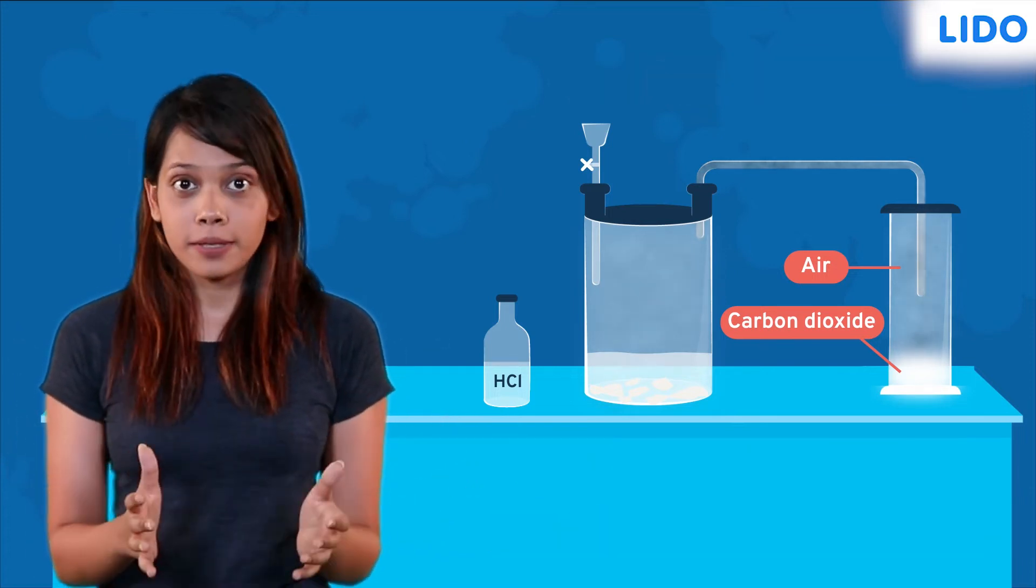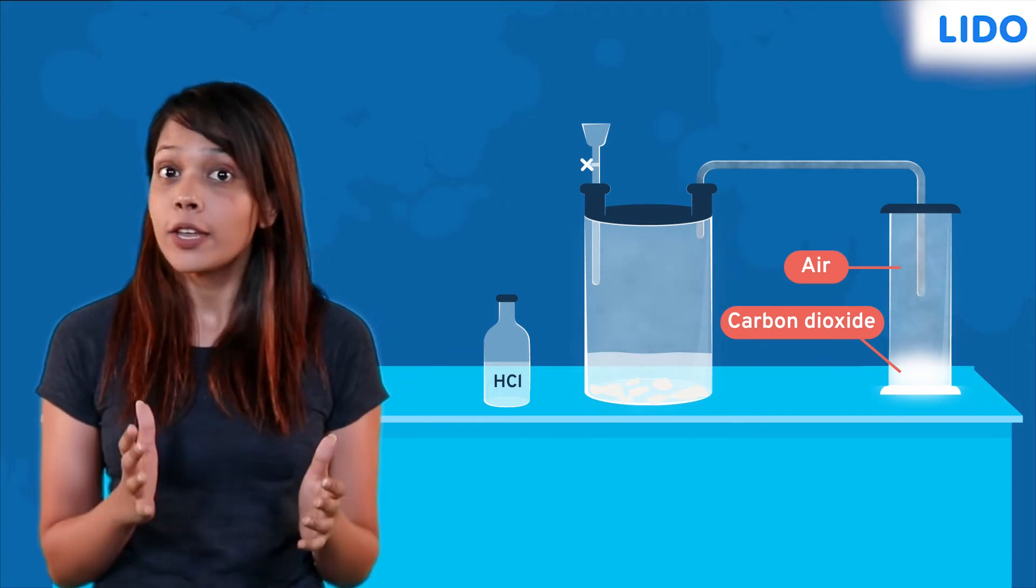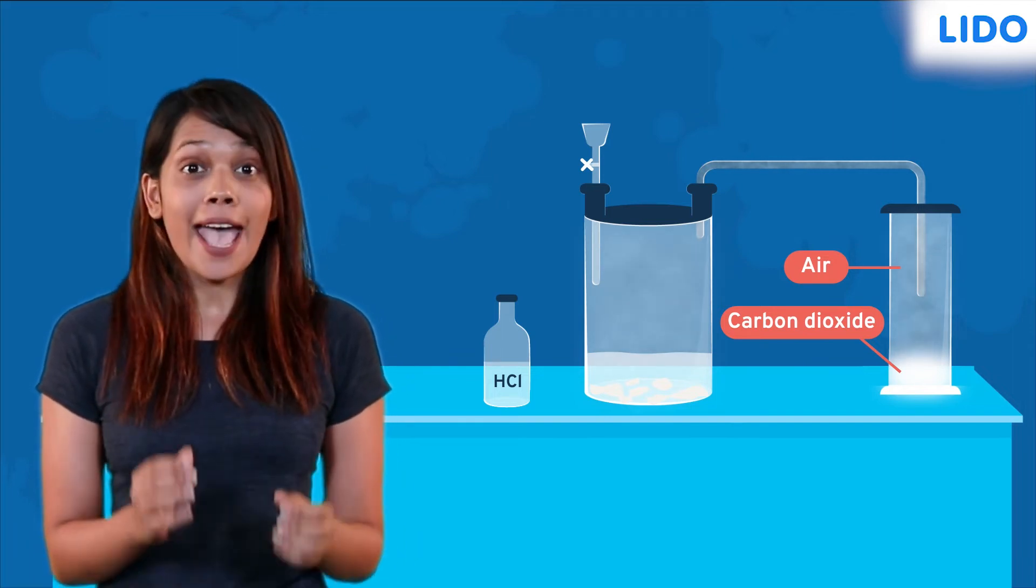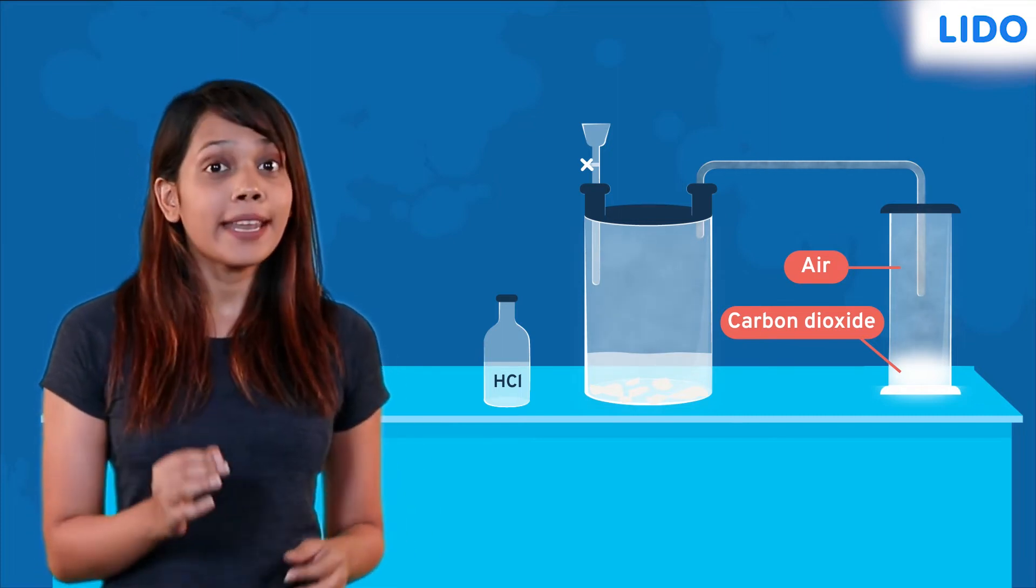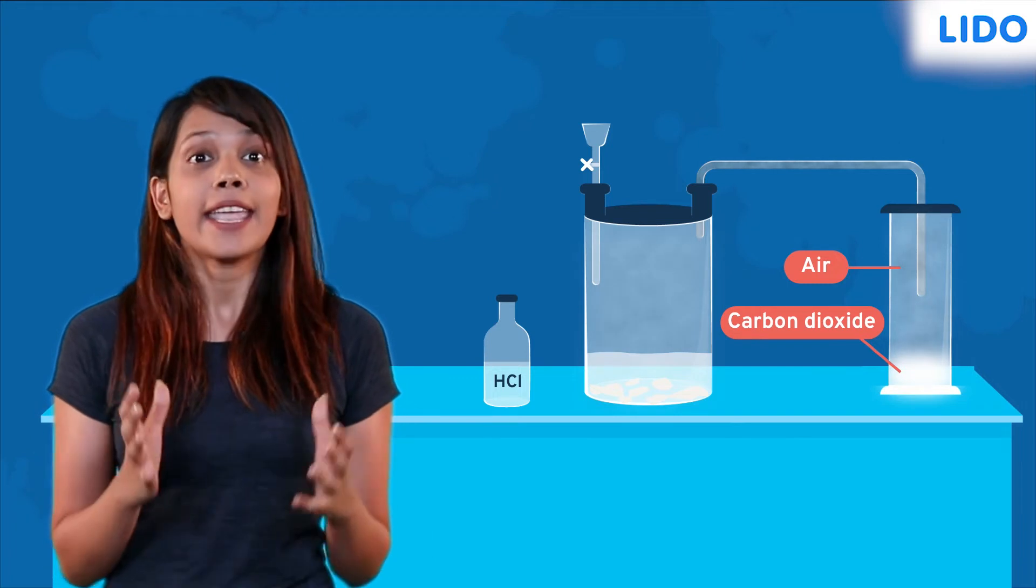The first few bubbles of carbon dioxide gas are not collected. They are allowed to escape as they may contain air and other impurities. The remaining gas is then collected in the gas jar.